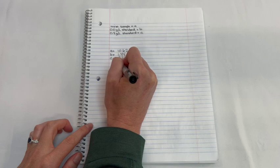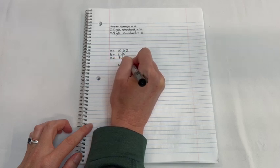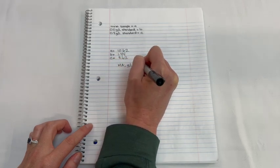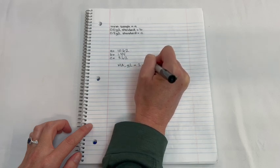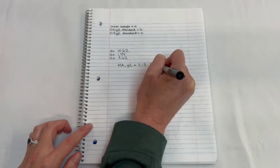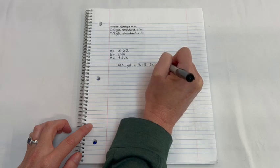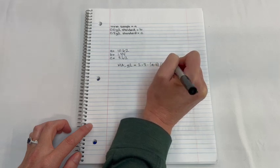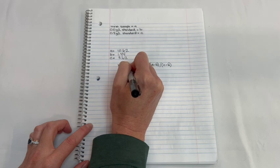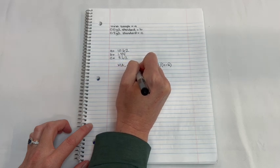Since we ran our standards, we are going to continue on with the quantitative mode procedure. Our wine sample values will be called A, our 0.0 gram per liter standard will be B, and our 0.4 gram per liter standard will be C. And we can calculate our malic acid concentration as follows.